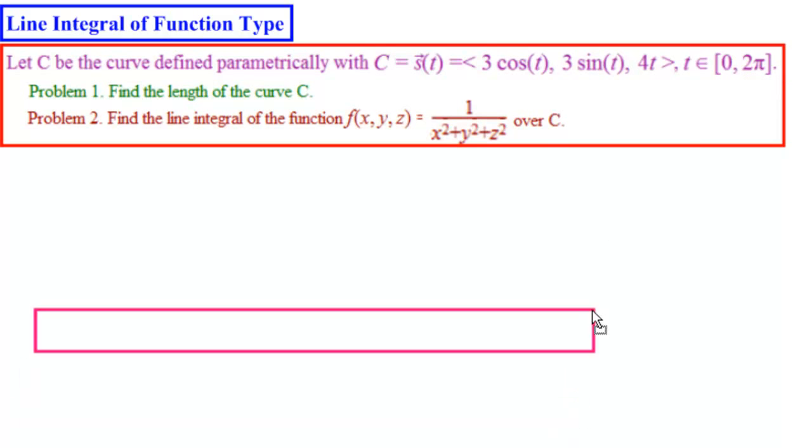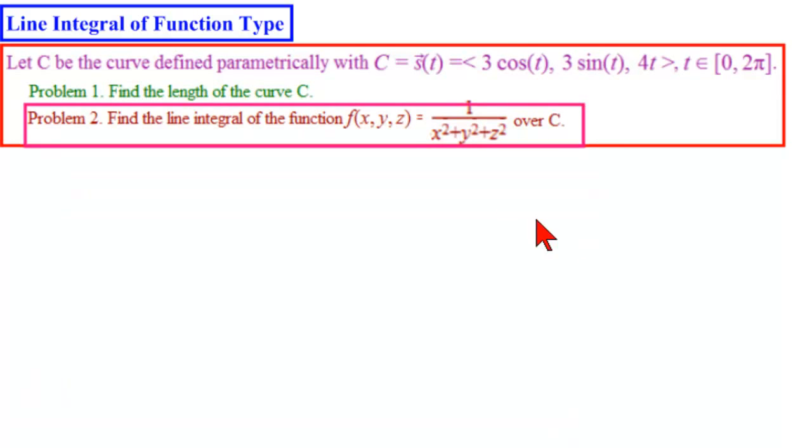Now we're working on problem 2 here, where we find the line integral of the function f(x, y, z) equal to 1 over x squared plus y squared plus z squared over the curve C. Remember that the key words line integral of function type is length, arc length, line integral of a function, not of a vector function, just a regular function.